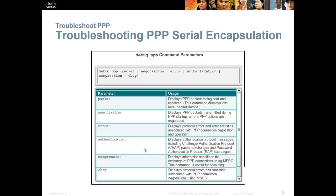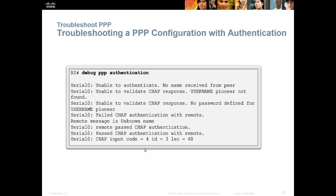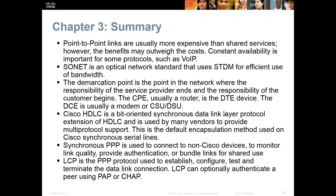For troubleshooting PPP: every command has a debug. You can use 'debug ppp', 'debug ppp packet', 'debug ppp negotiation', or 'debug ppp authentication'. If PPP won't come up at all, it's probably an authentication issue, so use 'debug ppp authentication'. If authentication is working but you have intermittent problems, look at the packets. Every time something happens involving PPP, you'll see messages like 'no name was received from the peer' — meaning the other router's sent-username was incorrect or wasn't configured.